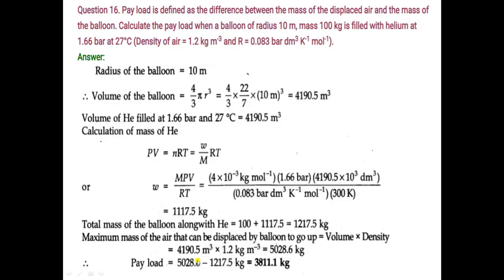Putting the value of volume, and density is given in the question as 1.2 kg/m³, then it is equal to 5028.6. That means the mass of the displaced air is now known.